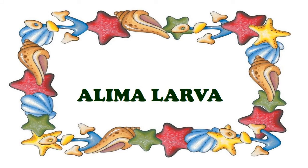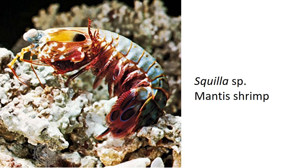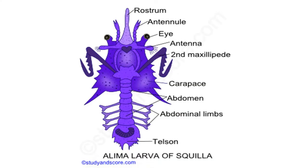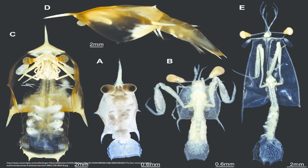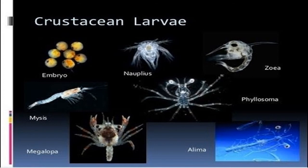The Alima larva is a modified form of Zoea found in some Malacostracans like Squilla, which hatch from the egg. It is a pelagic form with glassy transparency having a slender body. It bears a short and broad carapace. It has all the cephalic appendages but only the first two thoracic ones. A six-segmented abdomen with four or five pairs of pleopods can be seen. It differs from Zoea in having a well-formed second maxillipedes and the armature of the telson.